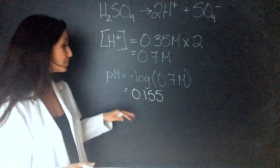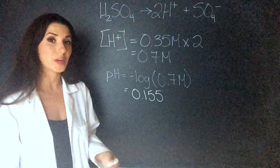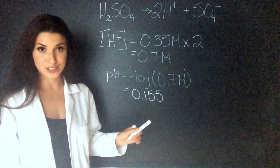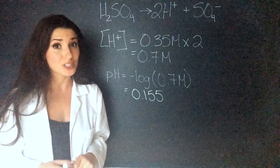Now remember, your pH number has to be between 0 and 14. And if we're less than 7, we are acidic. This is a super acidic solution. But that makes sense because sulfuric acid is a very strong acid.